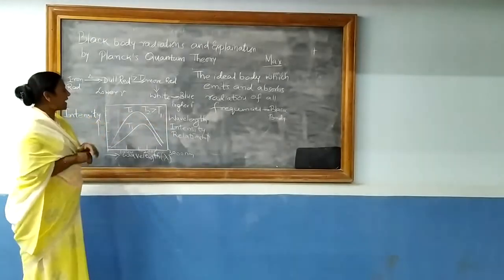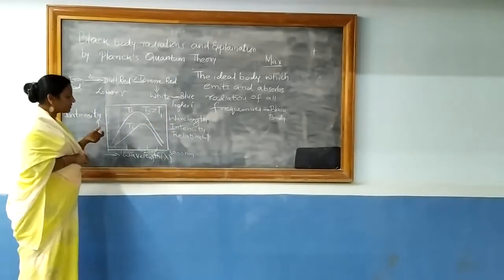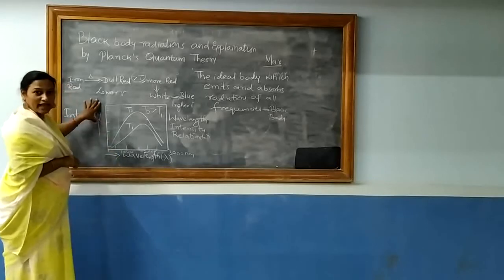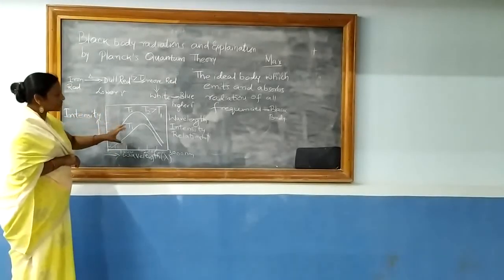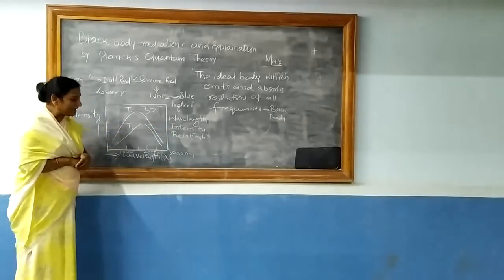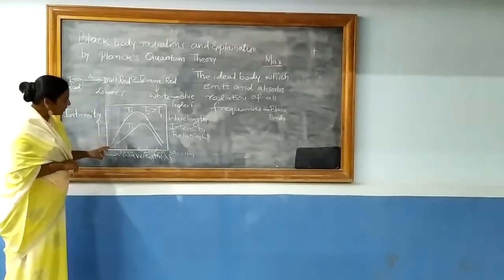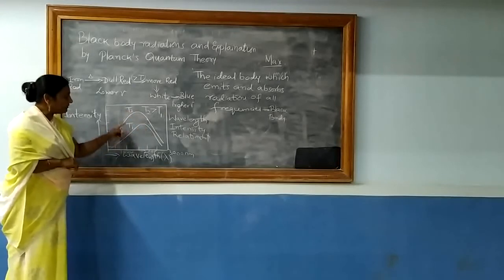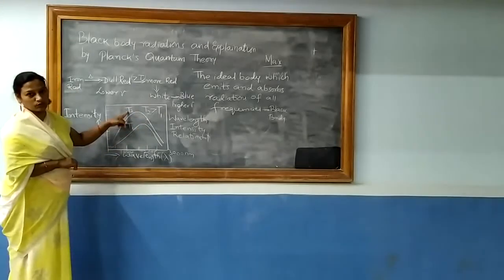Now this can also be explained in terms of an intensity-wavelength diagram. If you look at this relationship between wavelength and intensity, you can see two different curves at two different temperatures, temperature T1 and temperature T2.